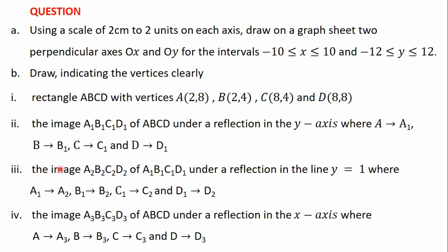Part III: the image A2, B2, C2, D2 of A1, B1, C1, D1 under a reflection in the line Y equals 1, where A1 maps to A2, B1 maps to B2, C1 maps to C2, and D1 maps to D2.